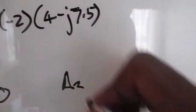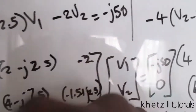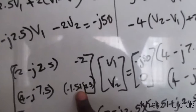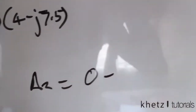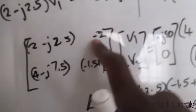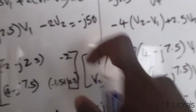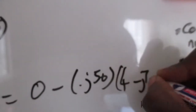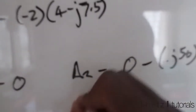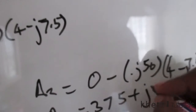For determinant Δ2 to find V2, replace the second column with [−j50, 0]. The first diagonal product is zero; the other diagonal gives −(−j50)(4 − j7.5). Punching this into the calculator gives Δ2 = 375 + j200.